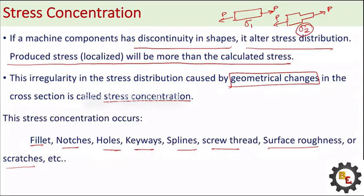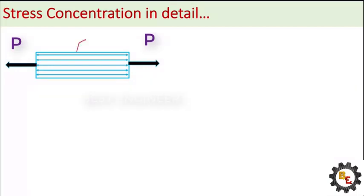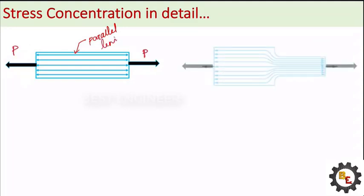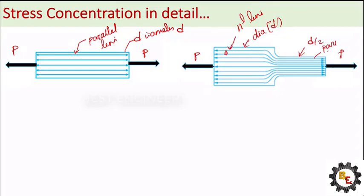These are the changes in the object that produce stress concentration in that area. After applying the load, the stress distribution will be like parallel lines. Now if we change the shape — say diameter D reduces to D/2 — and apply the same load P, the stress distribution in diameter D is parallel lines, and on the other side also parallel lines. But between the transition, the gap between stress lines is much more on one side and very less on the other. At the area where shape change occurs, the stress will be more than the average stress.